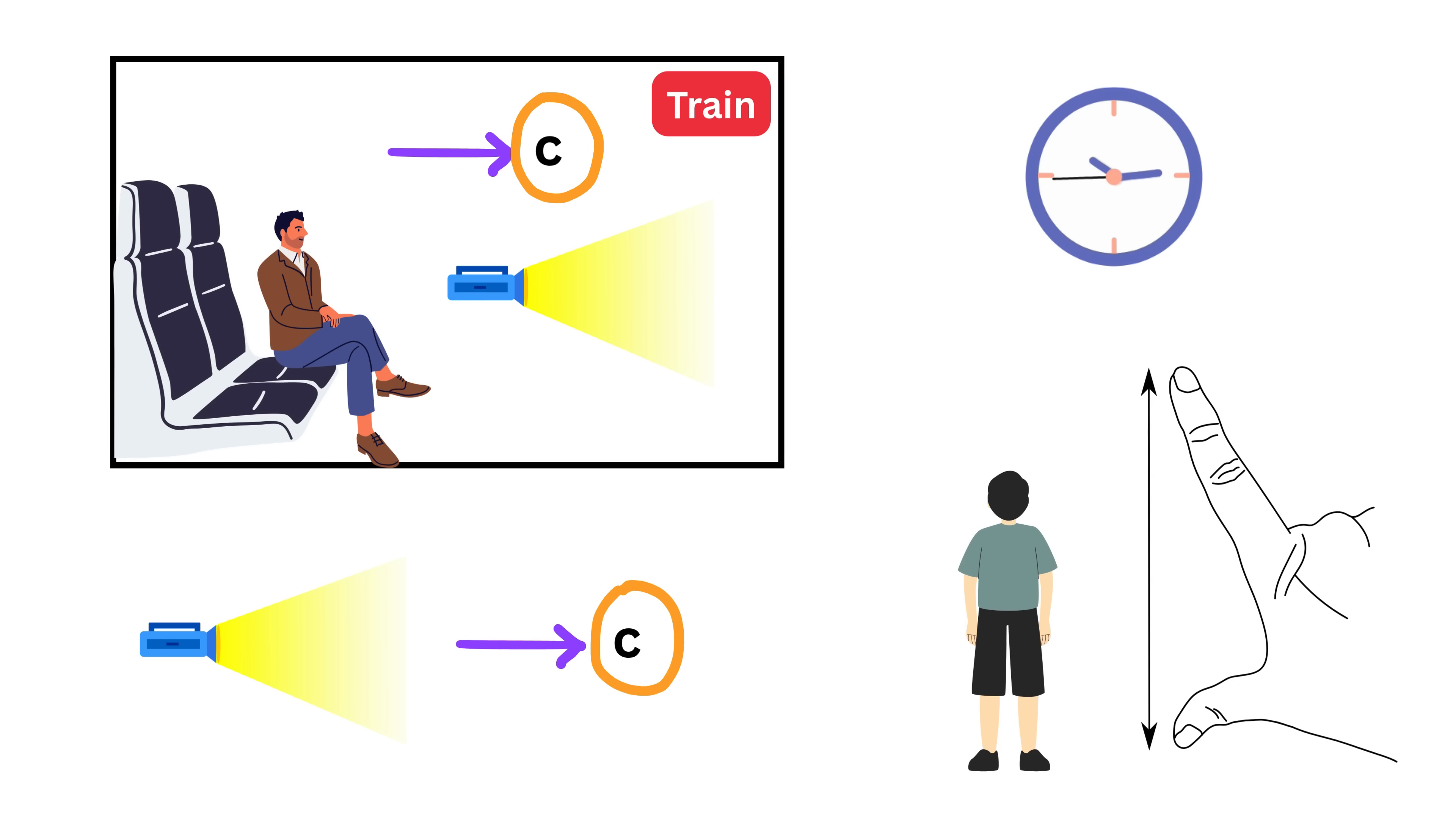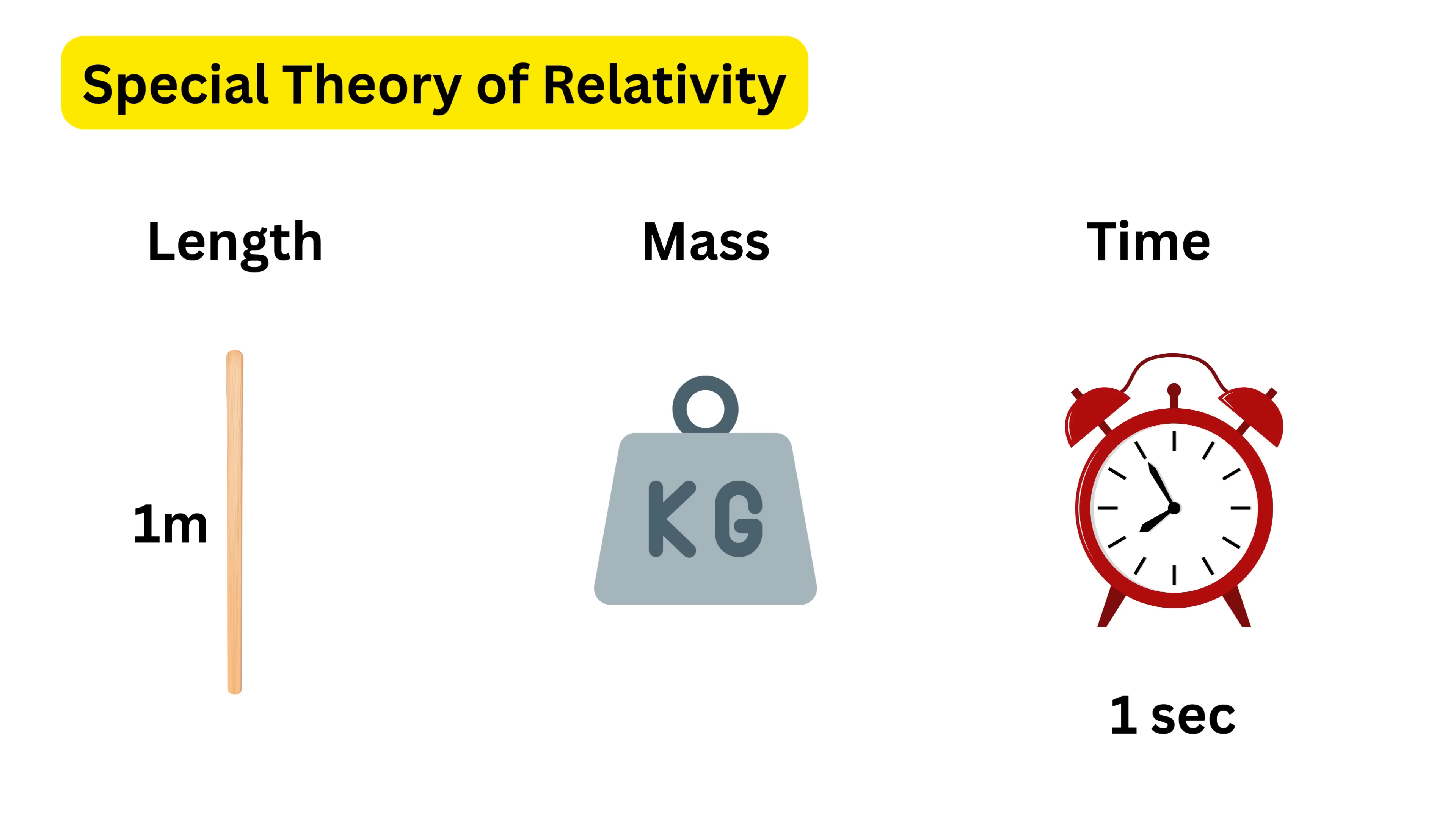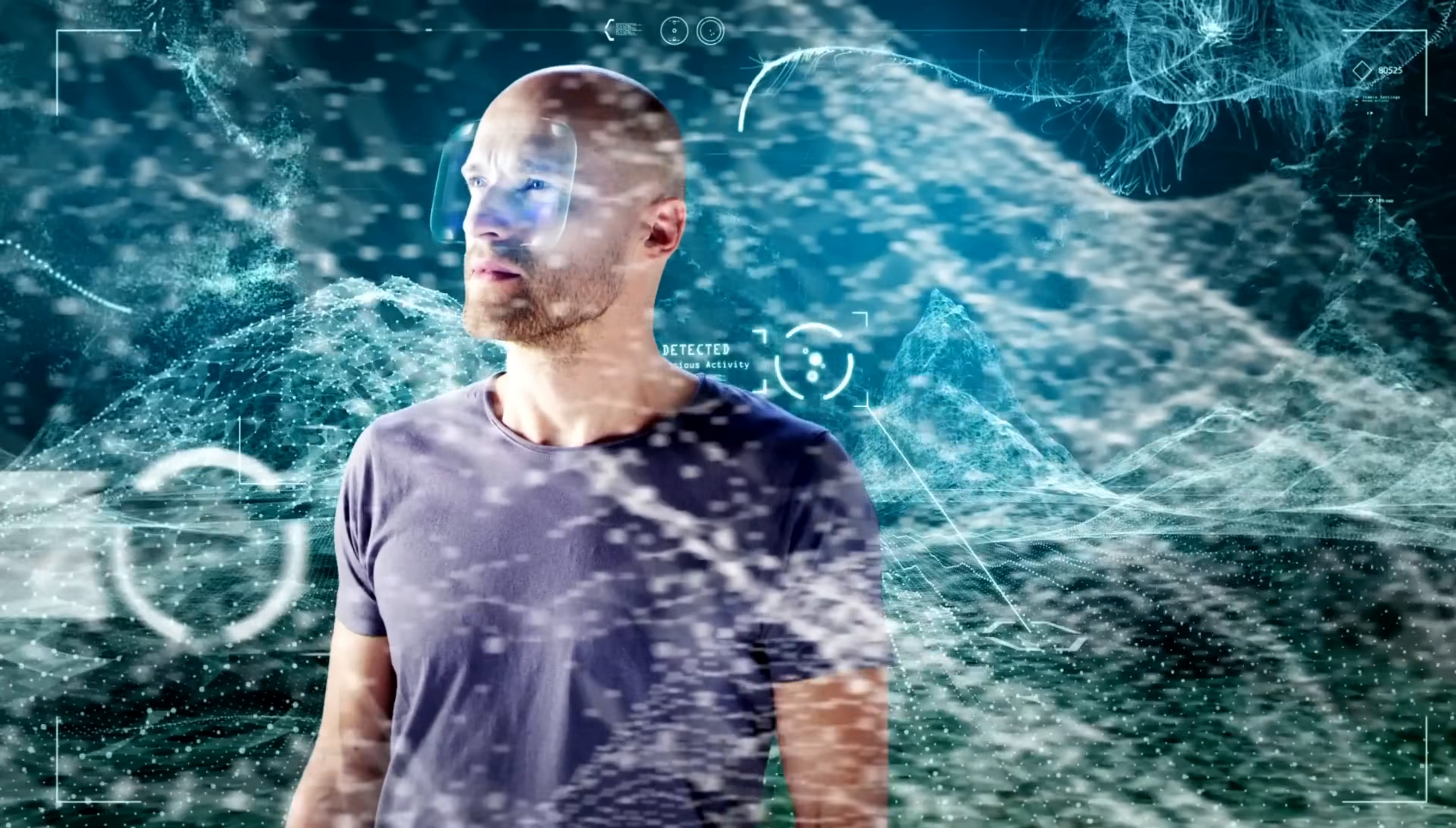These effects are not noticeable in daily life because we all move very slowly compared to the speed of light, but at very high speeds they become real and measurable. Remember I said that in classical mechanics, scientists believed that length, mass, and time were fixed. A meter was always a meter, a second was always a second, and so on. But now with Einstein's special theory of relativity, we learn that these things are not fixed. They can stretch or shrink depending on the motion of the observer. In simple words, to follow the two postulates, the universe gives up the idea of one single time for everyone and one single size for everything. Instead, it lets each observer have their own version of time and space. And this is the heart of special relativity. Reality is not the same for everyone. It depends on how you are moving.